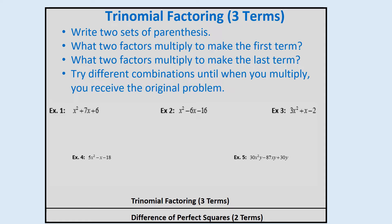The first step is to write our two sets of parentheses. Then ask yourself what two factors of the first term multiply to make that first term. After writing those in the beginning part of our parentheses, ask what two factors multiply to make the last term. The last bullet point tells us we're going to have to guess and check — try different combinations until, if we multiply it back out, we get back the original problem. We try a bunch of things and see if it actually works.